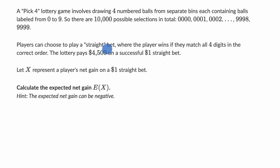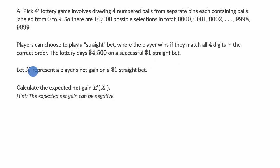Players can choose to play a straight bet, where the player wins if they match all four digits in the correct order. The lottery pays $4,500 on a successful $1 straight bet. Let X represent a player's net gain on a $1 straight bet. Calculate the expected net gain.